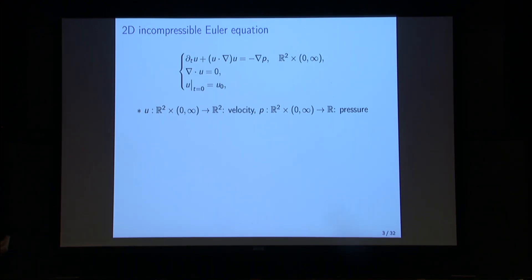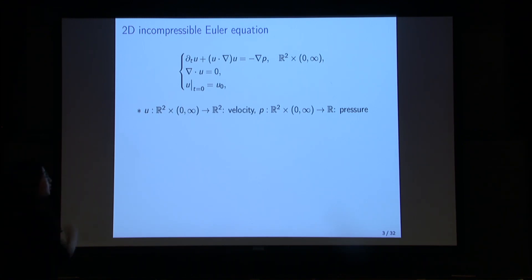The second equation explains the incompressibility, which gives the volume-preserving property of the fluid along the trajectory. Here we restrict our attention to the spatial domain R².